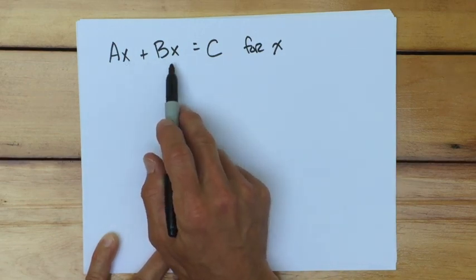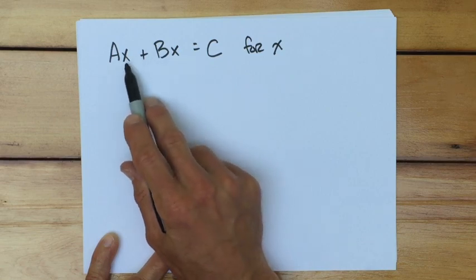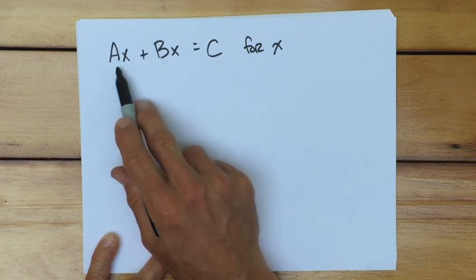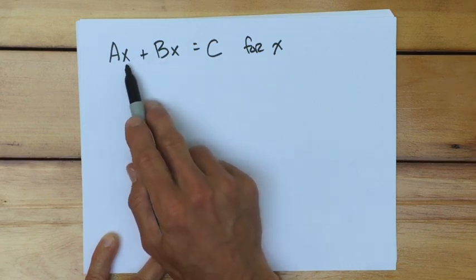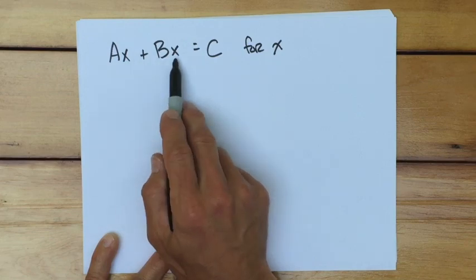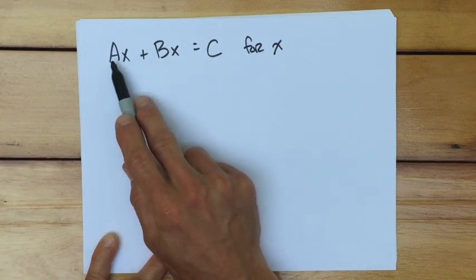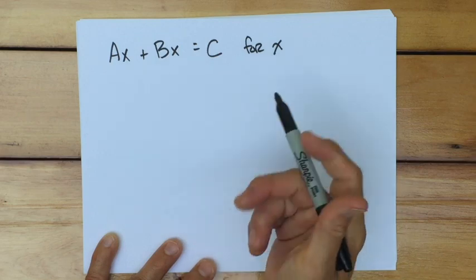We still want you to solve for x, but it looks more confusing because we have more than one x. So, do we mean the one on the left? Do we mean the one on the right? Well, these two are the same thing, and we actually have like terms here, because the variable parts, the x's, are the same.